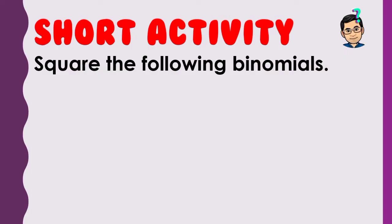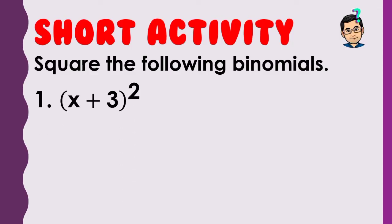Squaring a binomial is a Grade 7 special products lesson, taught during the second quarter of Grade 7 toward the end. So let's have number one: the quantity of x plus 3, squared. The steps in squaring a binomial are: first, square the first term.